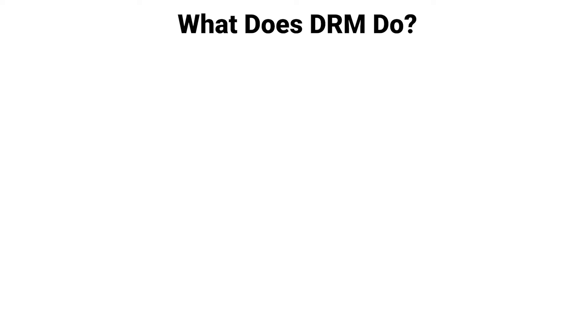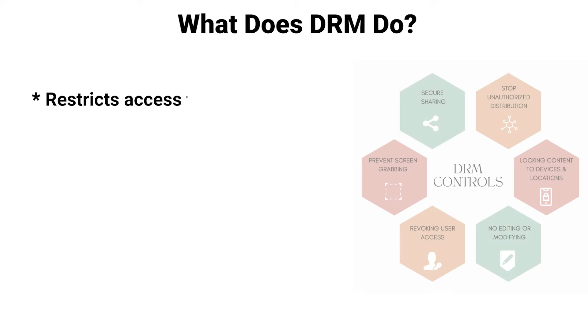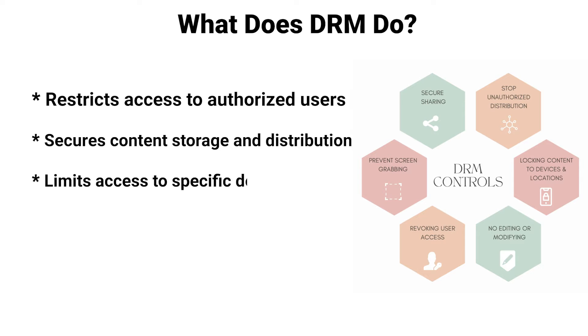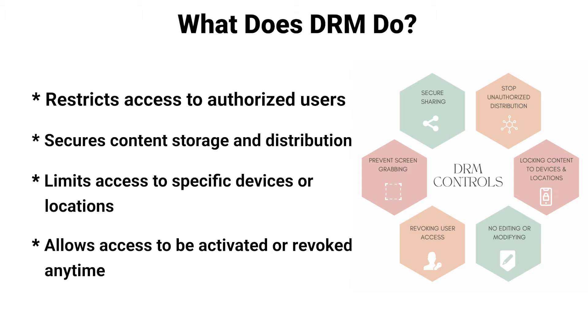What does DRM do? It restricts access to authorized users, secures content storage and distribution, limits access to specific devices or locations, and allows access to be activated or revoked at any time.